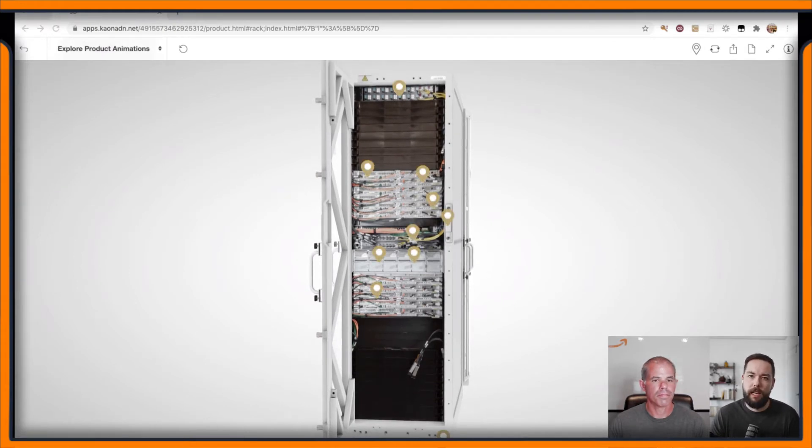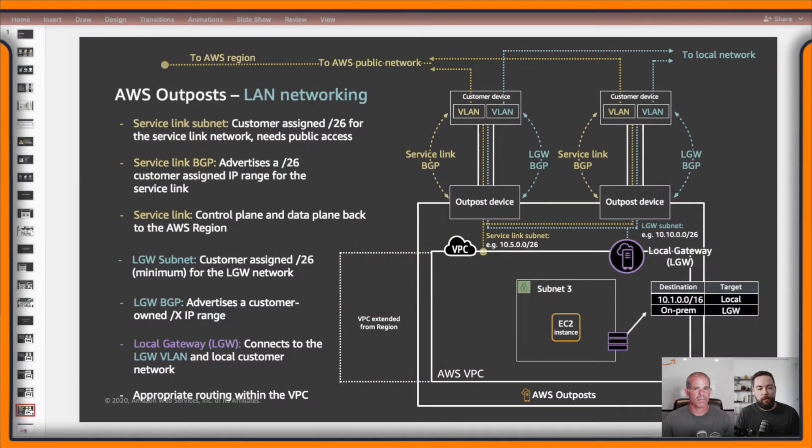What basically happens if the Outpost is disconnected is that after about four to six hours you lose connectivity back to the region, your IAM credentials will expire, and your EC2 instances will go into a state of unavailable. If it's a five-minute outage, your EC2 credentials are still available and haven't expired yet. We have a spooling mechanism in the Outpost to cache logs and data on the Outpost — if the connection comes back within a couple of minutes, it's fine and the Outpost keeps functioning as per normal.